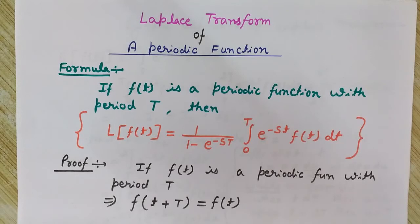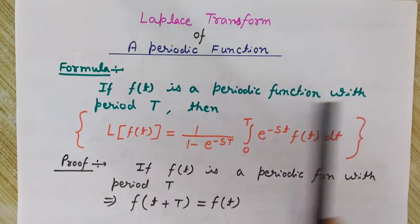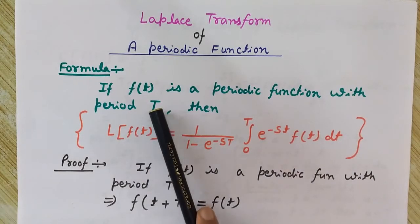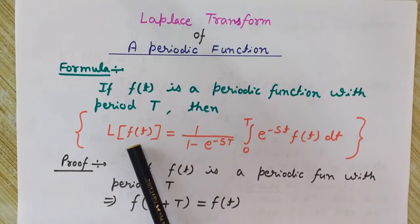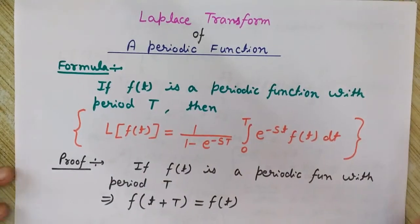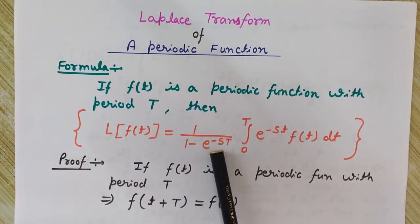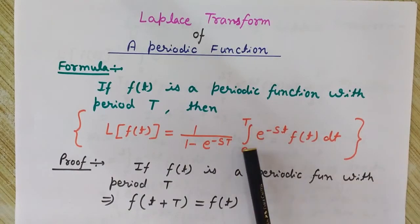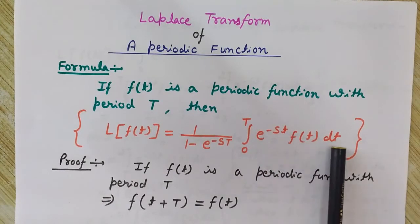First, let's start with the formula. If f(t) is a periodic function with period capital T, then the Laplace transform of f(t) would be 1 divided by (1 minus e to the power minus sT), times the integral from 0 to T of e to the power minus st times f(t) dt.